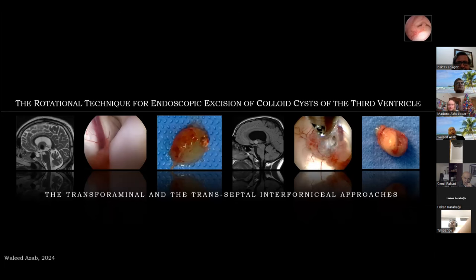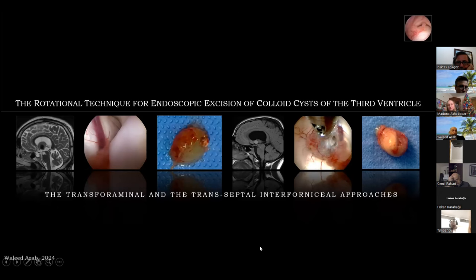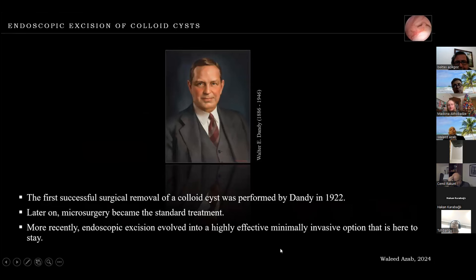Now let's move to the rotational technique for endoscopic excision of colloid cysts of the third ventricle. This is a very important topic with a lot of controversy around endoscopic versus microsurgical colloid cyst resection. I believe that colloid cyst excision should be done endoscopically until proven otherwise. I will elaborate on two variants of the rotational technique: the transforaminal and the transseptal interforniceal approaches. The first successful surgical removal of a colloid cyst was performed by Dandy in 1922, and more recently endoscopic excision evolved into a highly effective minimally invasive option.